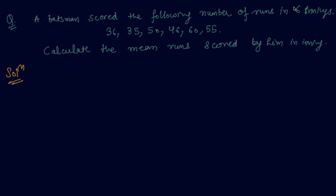This is a typical question based on arithmetic mean in which the question states that a batsman scored the following number of runs in six innings: 36, 35, 50, 46, 63, and 55. The question asks us to calculate the mean runs scored by him in an inning.